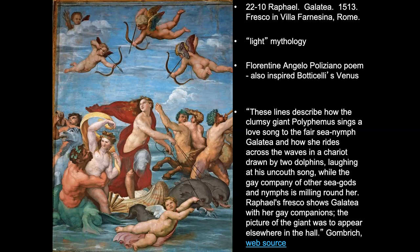It's a cool, romantic, and dramatic story: the clumsy giant Polyphemus sings a love song to the fair sea nymph Galatea, who rides across the waves in a chariot drawn by two fearsome-looking dolphins, laughing at his uncouth song while a gay company of sea gods and nymphs mills around her. The giant loves her, tries to woo her, and she's just living her life and frolicking. You'll notice there's no big background — everything is pressed up against the picture plane, similar to what we saw with Botticelli.